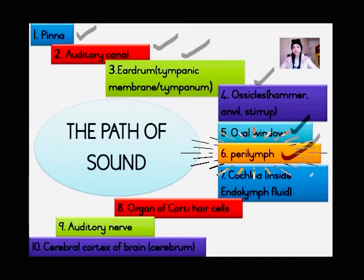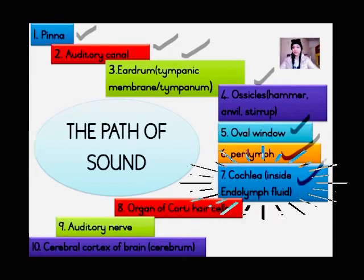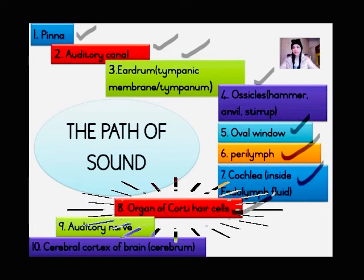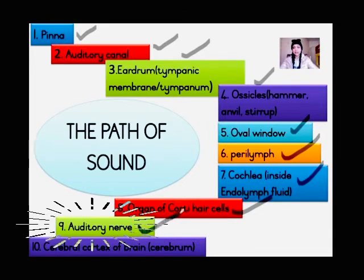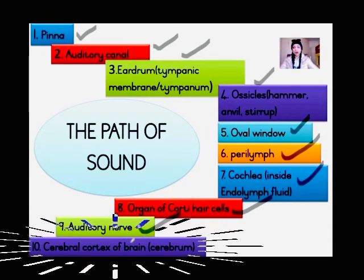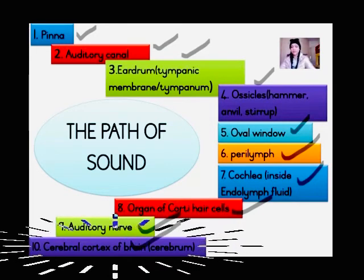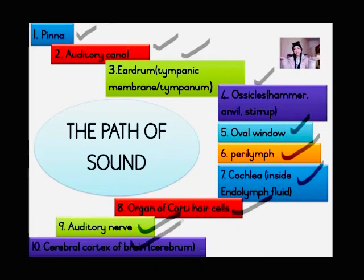The wave movements are transferred to the endolymph, which is inside the cochlea. The hair cells of the organ of Corti bend or brush against the membranes, converting the mechanical stimulus of the sound wave into an impulse. The impulse is passed through the auditory nerve into the auditory center in the cerebral cortex of the brain. The sensation of sound is perceived and interpreted. Excess vibrations are passed through the round window to prevent sound pressure and echoes.